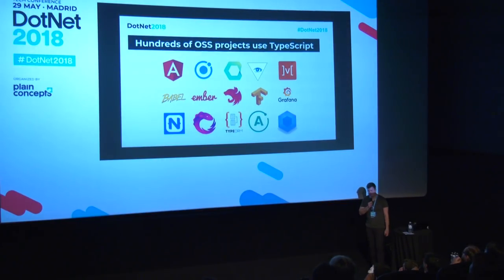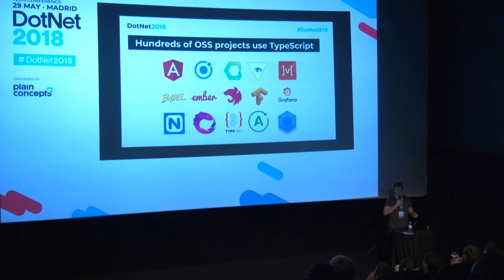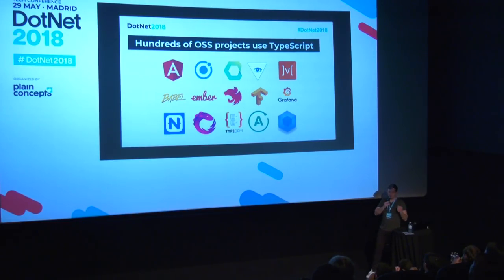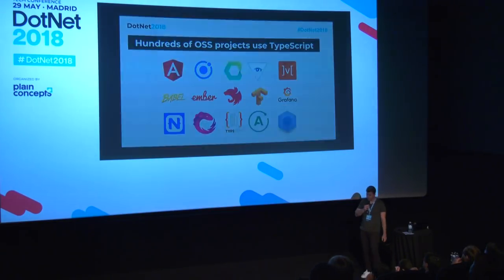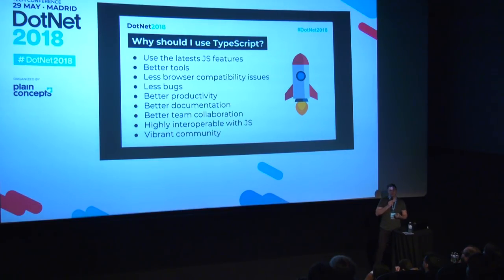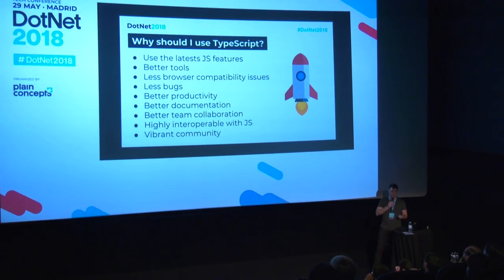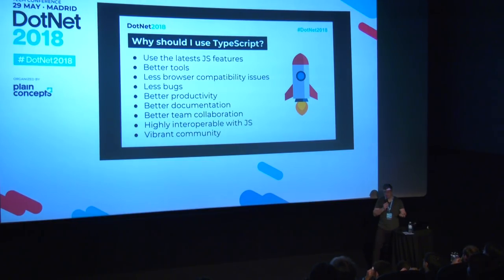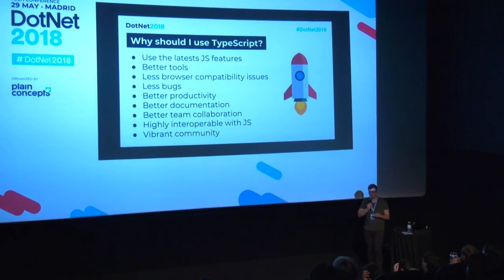TypeScript is also used by hundreds of open-source projects. Some people might be surprised that Babel and Webpack use TypeScript, but in recent months they've started. Webpack, for example, is implemented in JavaScript, but the TypeScript compiler checks that the JavaScript types are correct — so TypeScript still helps the project. Reasons to use it include: latest JS features, better tools, fewer browser compatibility issues, fewer bugs, improved productivity, better documentation, better team collaboration, high JavaScript compatibility, and a very active growing community.